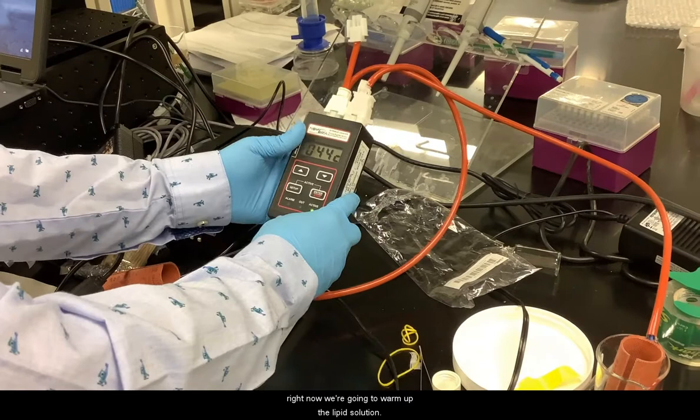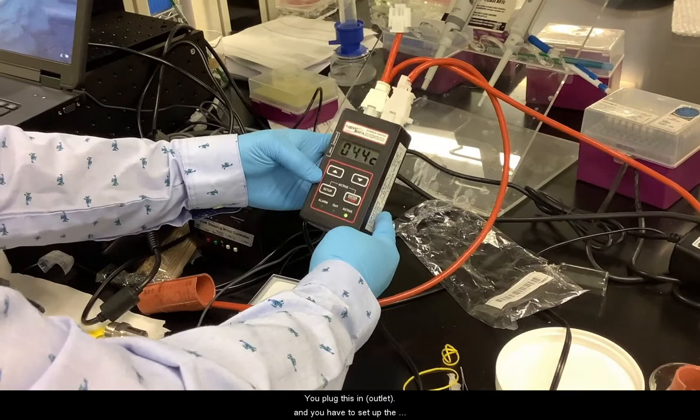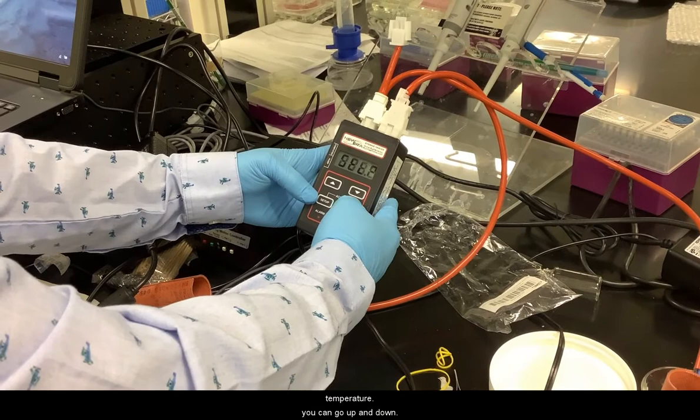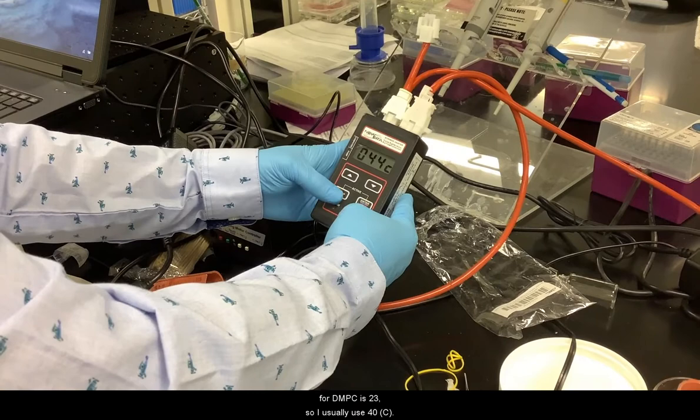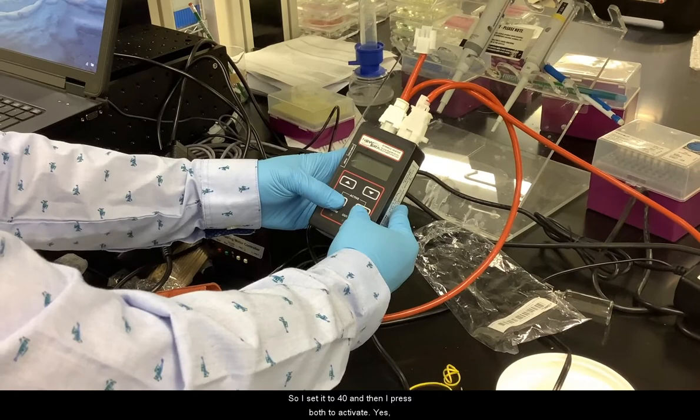To control this you plug it in and set it up. This is set temperature, and you can go up and down. The phase transition temperature for DMPC is 23, so I usually use 40. I set it to 40, and then press both to activate.